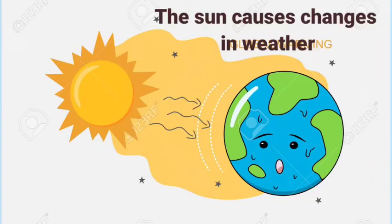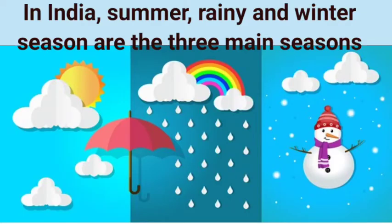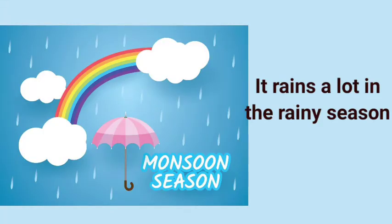The sun causes changes in weather. The weather changes from season to season. In India, summer, rainy, and winter season are the three main seasons. During summer, it is dry and hot in most parts of India. It rains a lot in the rainy season.